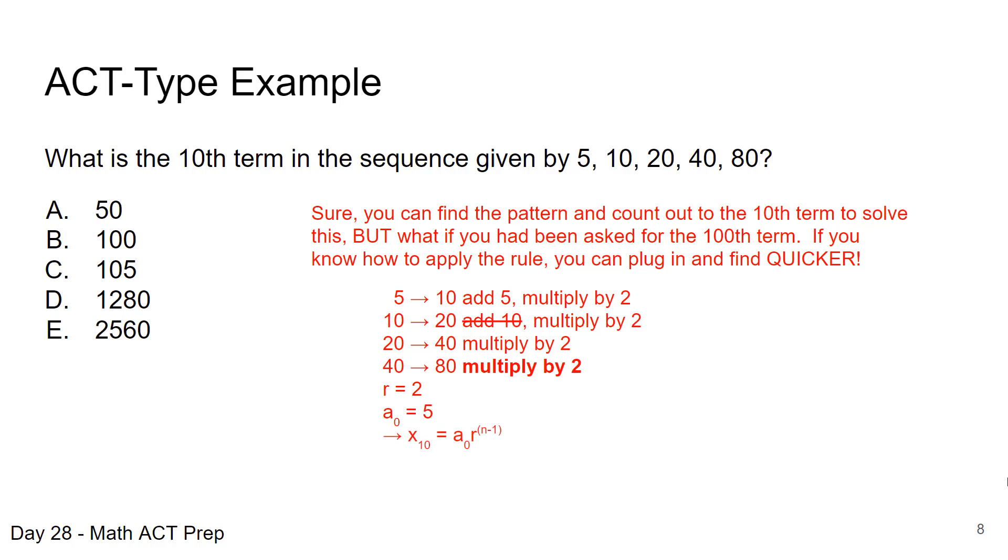We can use our formula. We're looking for the 10th term. And that's equal to that initial value 5 times r to the n minus 1. So we'll plug in our values of 5, 2, and then we have a value of n as 10. We simplify here and we're going to have 5 times 2 to the 9th power. And that equals 2,560, which is answer choice E.